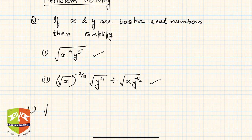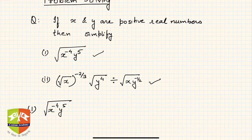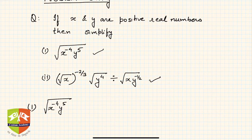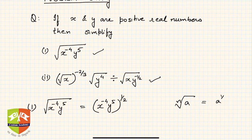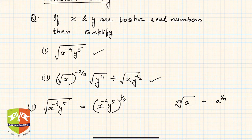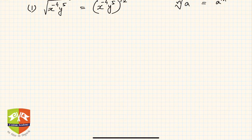Let's start with the first one: x to the power minus 4 and y to the power 5. I know most of you get intimidated by seeing variables, but working with variables is much easier than numbers because the calculations are relatively fewer. Using the laws of exponents, the square root of anything is x to the power minus 4 times y to the power 5, the whole raised to the power half. The rule used is: the nth root of a equals a to the power 1 by n. x and y are given as positive to avoid square-rooting a negative number.